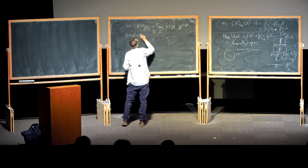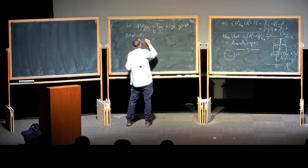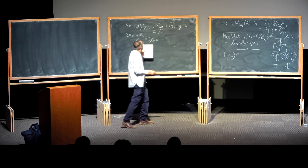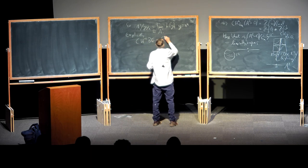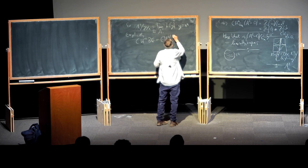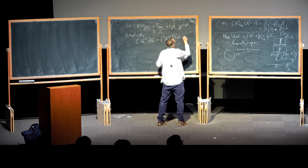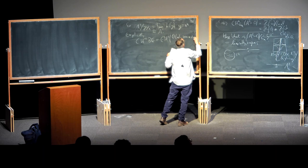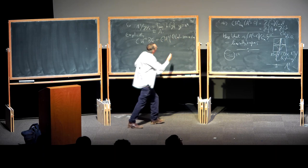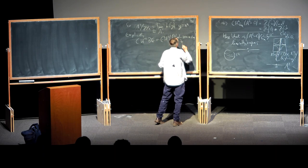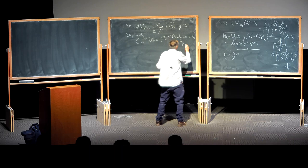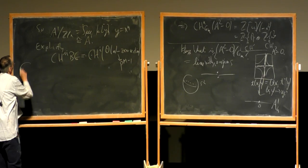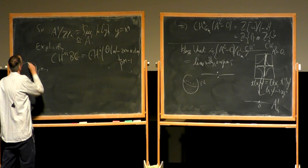The i-th Chow group of the cyclic group of order N is the i-th Chow group of O(N) minus the zero section over P^∞. The Chow ring of the total space of a line bundle minus the zero section is, as we've seen, the Chow ring of the base modulo the first Chern class of that bundle. So the Chow ring of BG — classifying space of the cyclic group — is Z[U] modulo N·U. This is Z in degree zero, Z/N in degrees one, two, and so on.